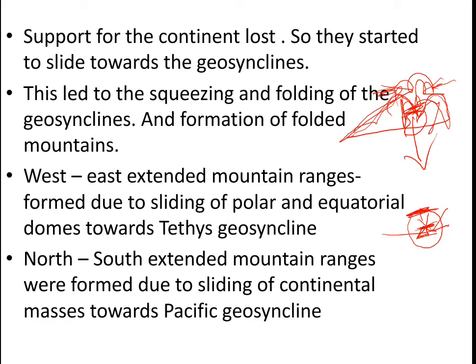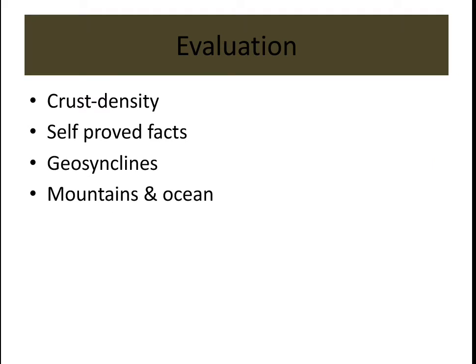The Himalayas are an example of mountains formed in this west-to-east direction. North-to-south extension mountain ranges were formed due to the sliding of continental masses toward the Pacific geosynclines. The continental masses moved toward the Pacific geosyncline while the polar mass remained stationary. That is how the north-south extension of mountain ranges was formed.